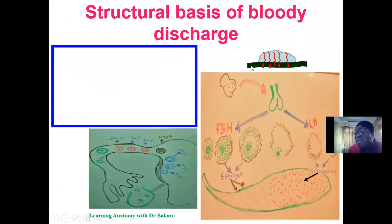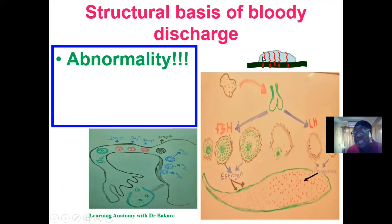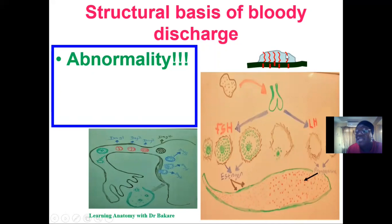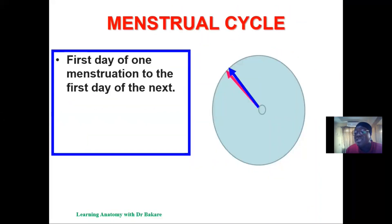The endometrium lining is made up of two sub-layers — the stratum basalis and the stratum functionalis — with arteries embedded within them. It is the stratum functionalis that gets shed during menstruation. Because it is embedded with blood vessels, there is a bloody discharge during shedding. This process is considered scientifically abnormal because the normal scenario is for fertilization and implantation to occur after ovulation.